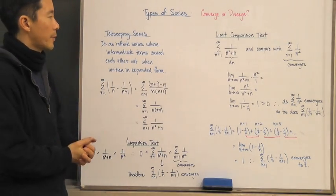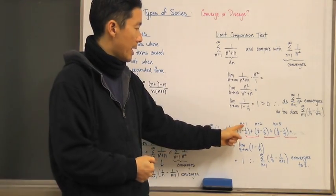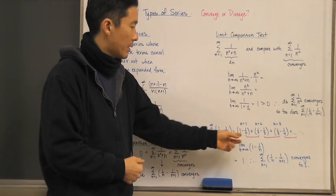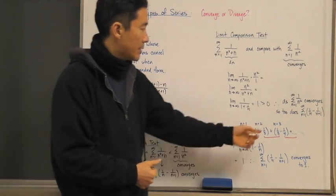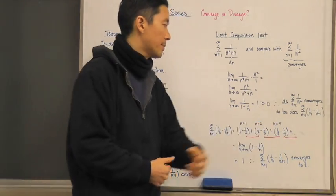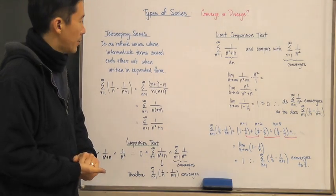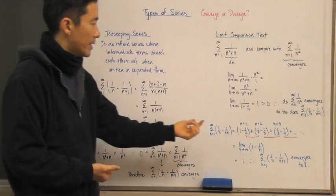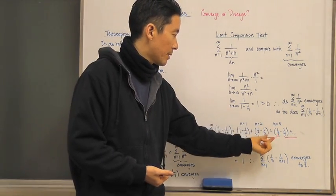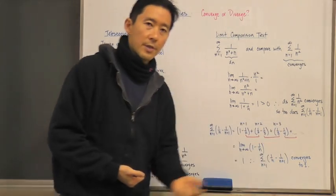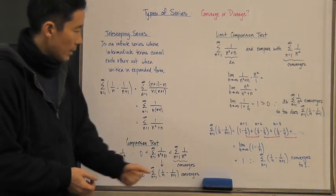Now let's expand the series and see what it looks like. When n equals one, we get one minus one half; when n equals two, we get one half minus one third; and so on. Notice the reason terms are canceling: we have minus one half and plus one half, minus one third and plus one third, minus one fourth and plus one fourth — all those intermediate terms cancel out.